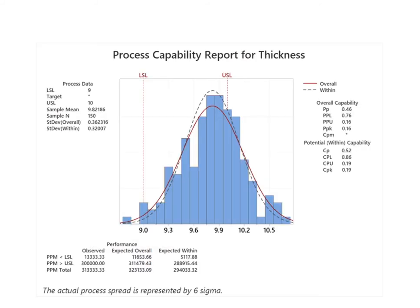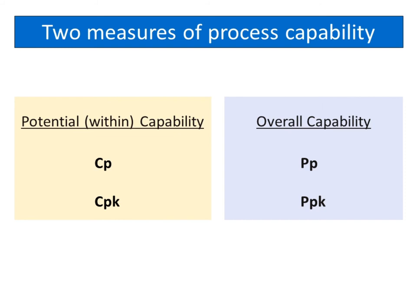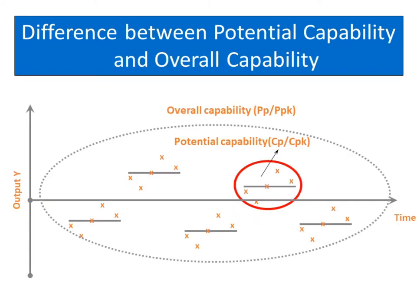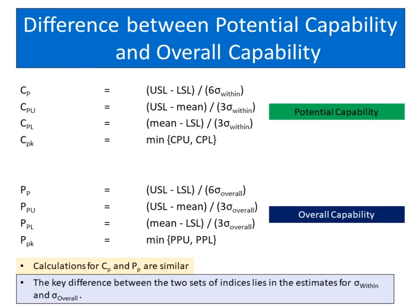This is the process capability report for thickness. There are two measures of process capability: potential capability, represented by CP and CPK, and overall capability, represented by PP and PPK. Potential capability only accounts for the variation within the subgroups while overall capability accounts for the overall variation of all measurements taken. The key difference between the two sets of indices lies in the estimates for within standard deviation and overall standard deviation.